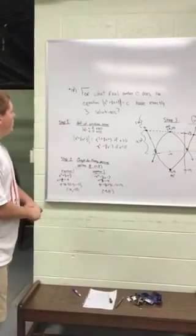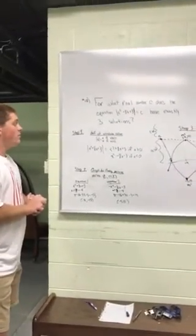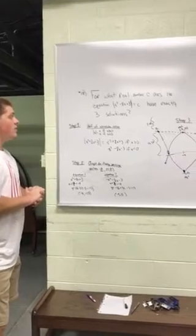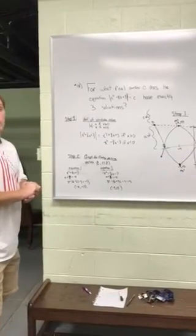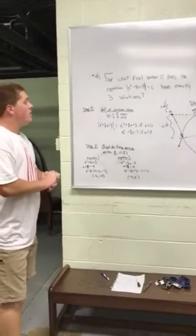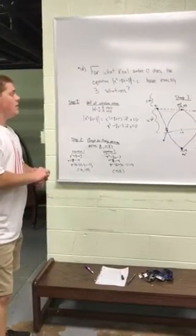The first step I took to approach this problem was I knew the definition of absolute value: the absolute value of x equals x if x is greater than or equal to 0, and it equals negative x if x is less than 0.